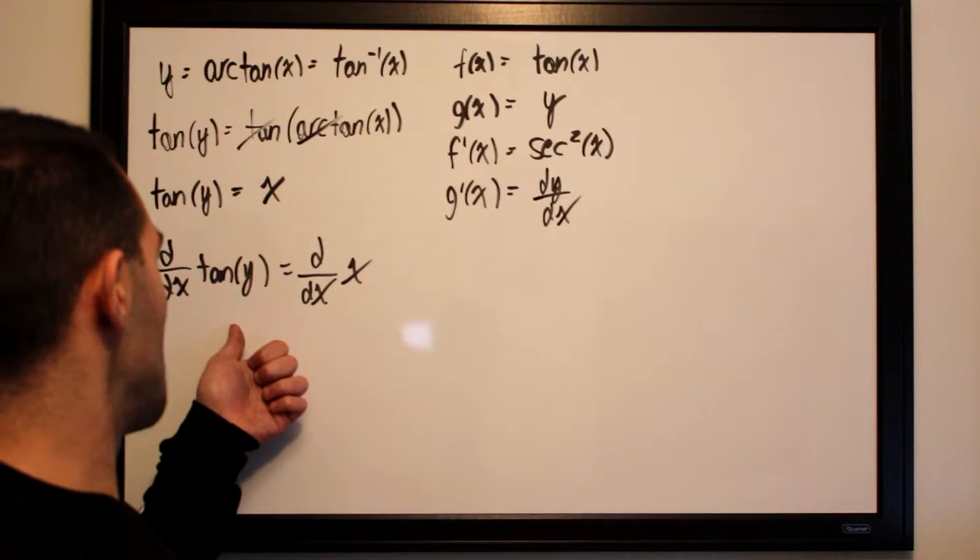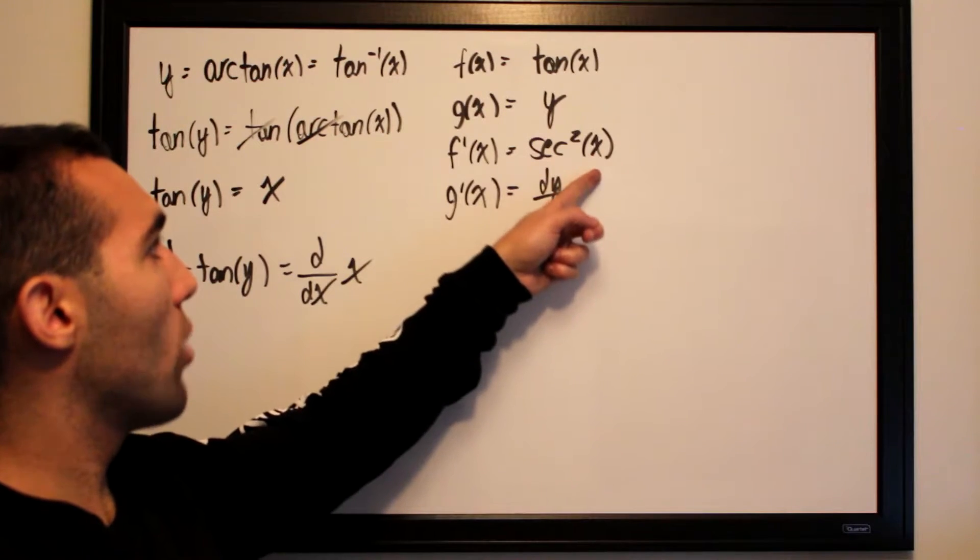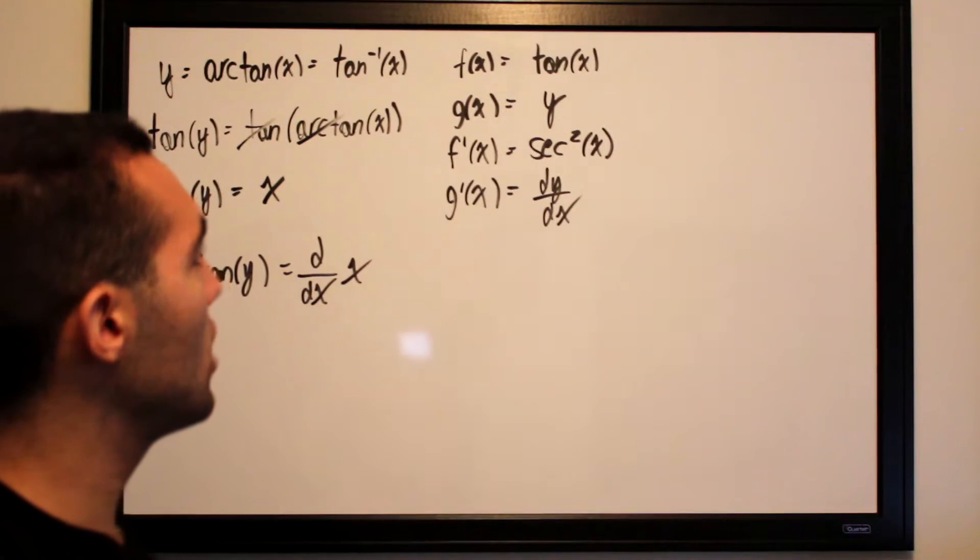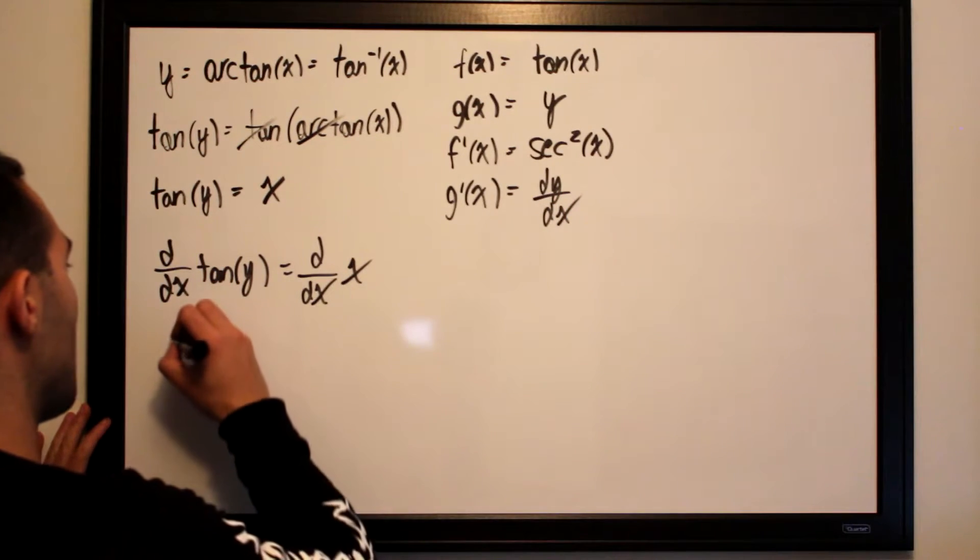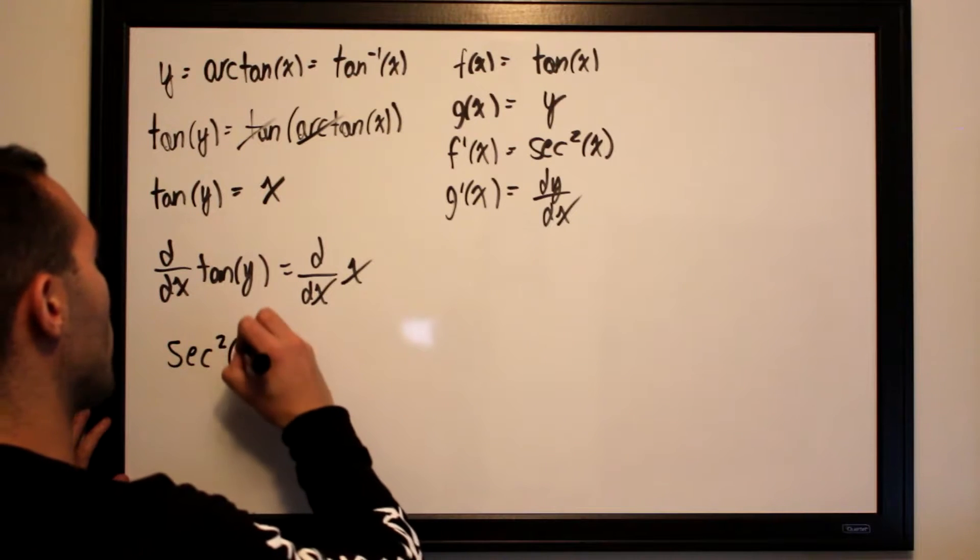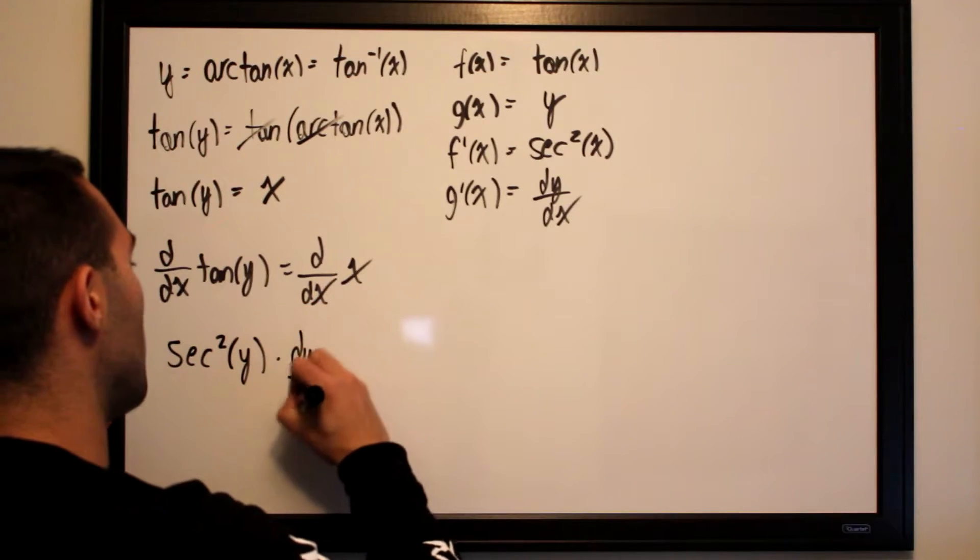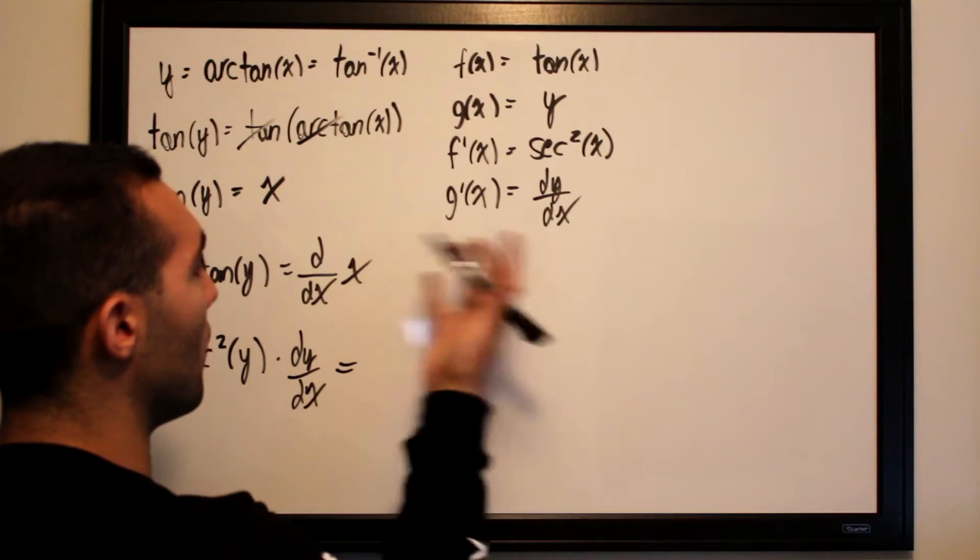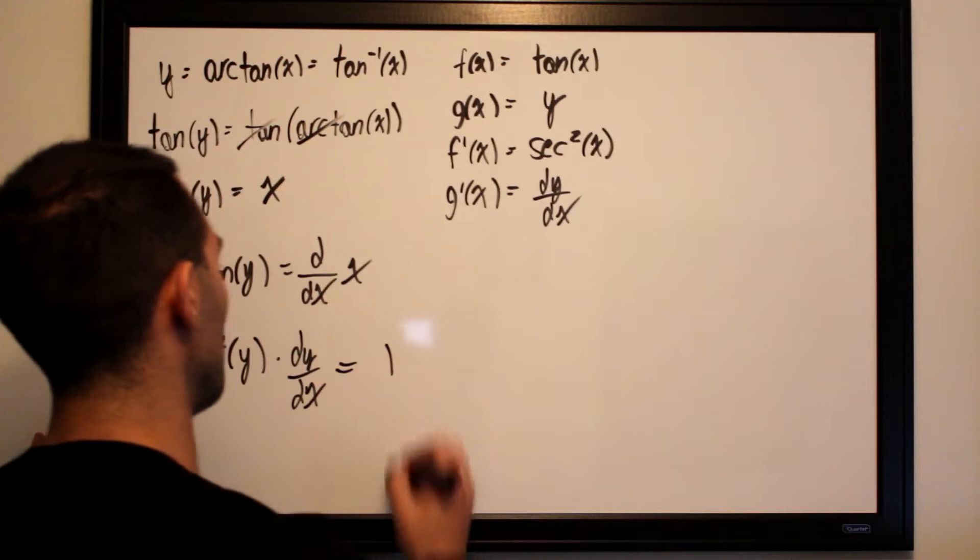So we differentiate both sides, one with the chain rule, where we will have f prime composed of g multiplied by g prime. This is all chain rule application. So this side will be equal to secant squared of y multiplied by dy/dx equals the derivative of x with respect to x, which is simply equal to 1.